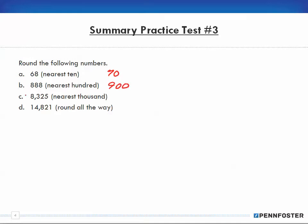Next, I have 8,325 and I'm rounding to the nearest thousand. I start with the 8 in the thousands place, and in the hundreds spot I have a 3, which is less than 5, so I'm going to round down. My answer is 8,000.